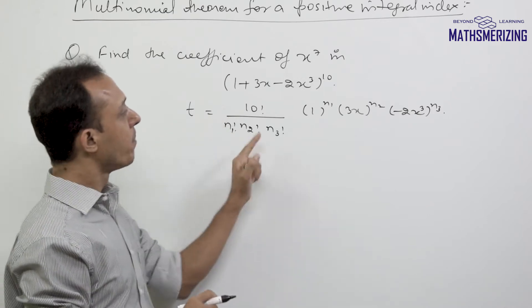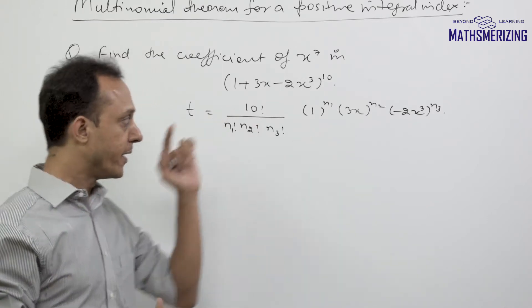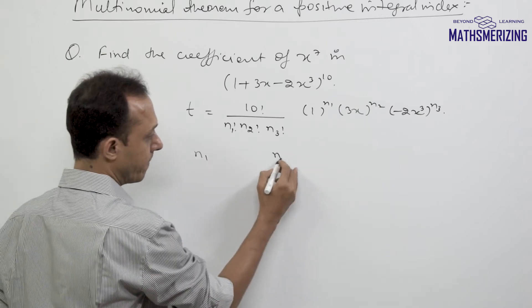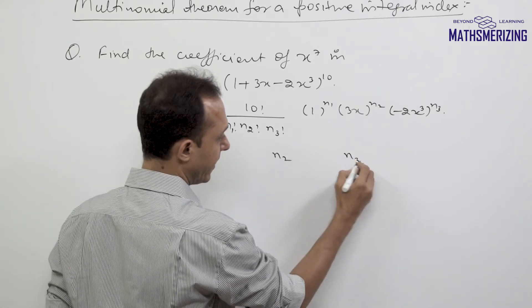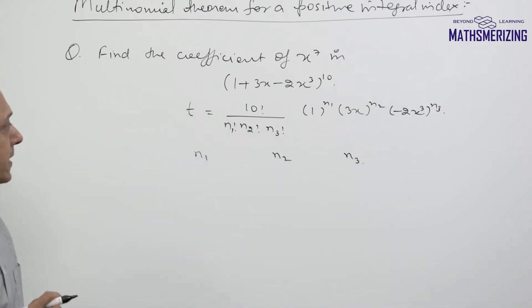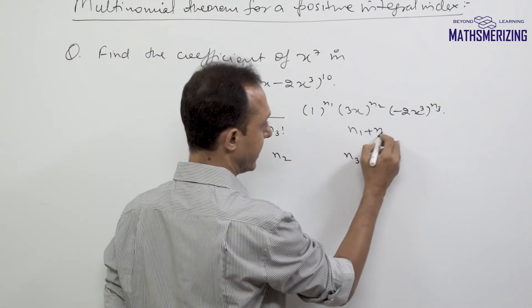Now I'll have to look at all possible combinations of n1, n2, and n3, where the sum of these indices n1 + n2 + n3 should be 10.